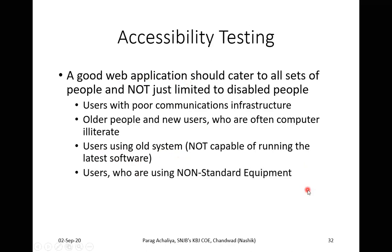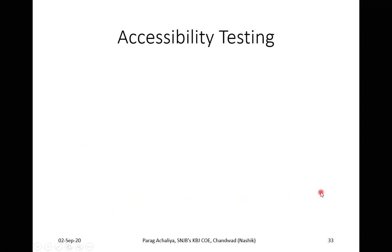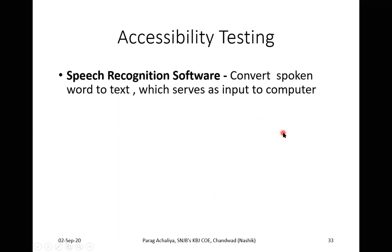We should consider users with old systems and ensure the web application is tested on such systems. Also consider users who are using non-standard equipment — non-standard simply means low-quality or cheap devices. Additionally, users who have restricted access: for example, nowadays internet is 4G but in some areas you hardly get 2G or 3G. Or in college, behind a proxy server, you cannot access YouTube or Facebook. This is the type of restricted access we must consider in accessibility testing.